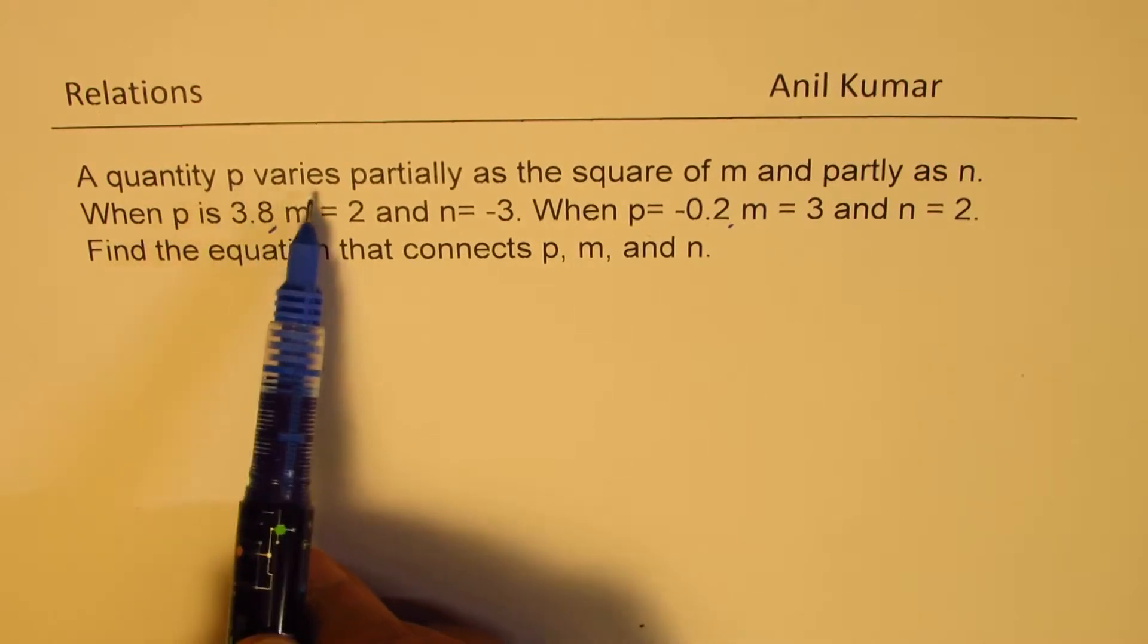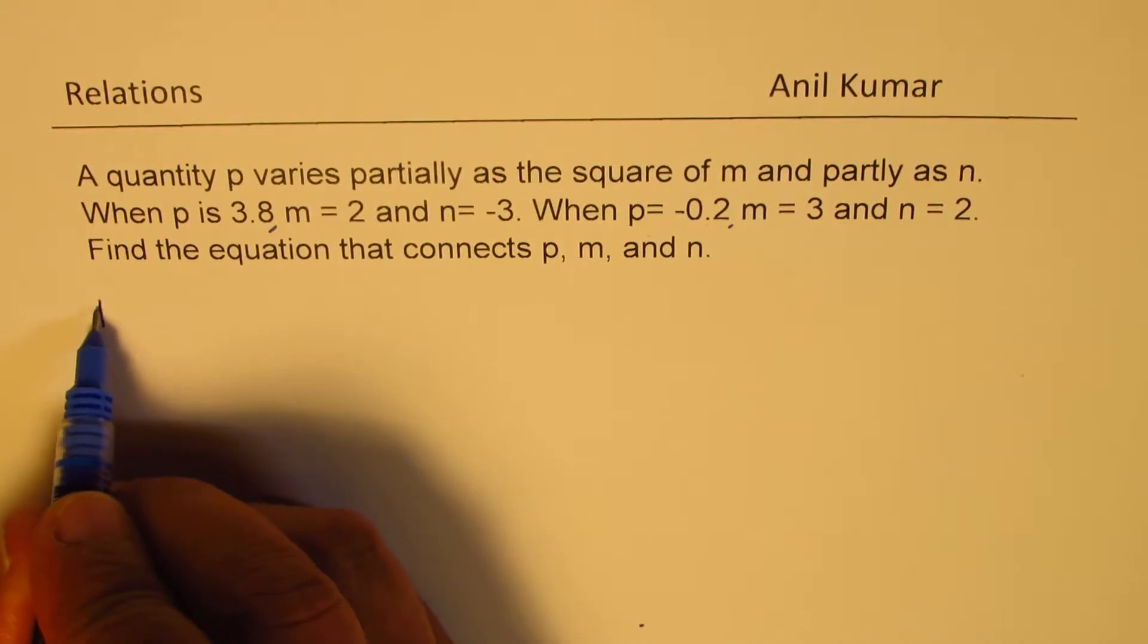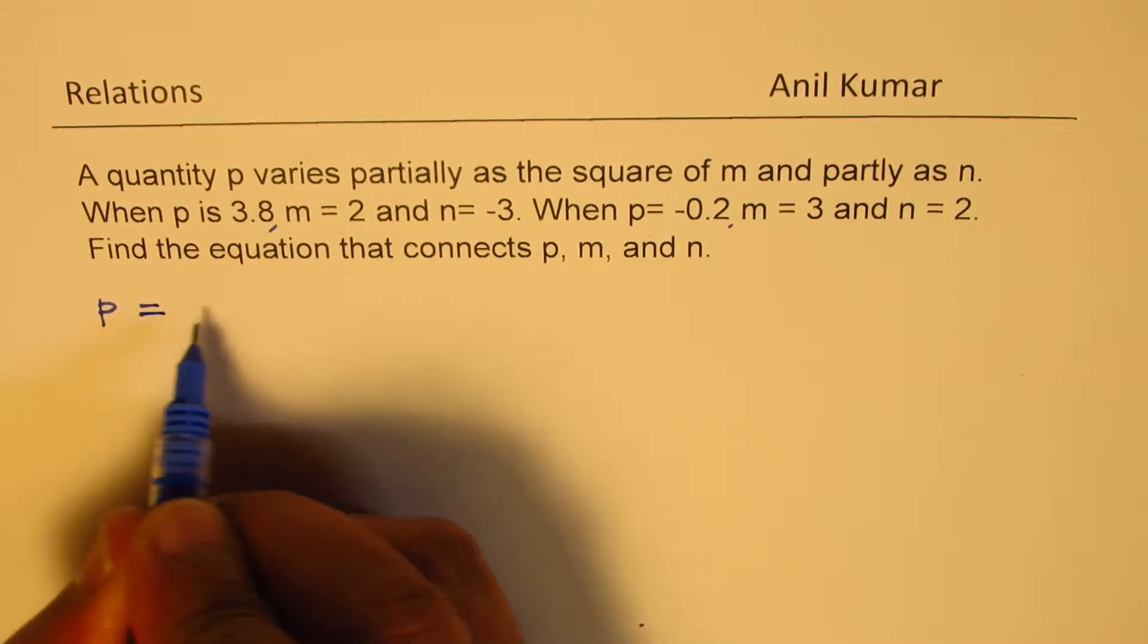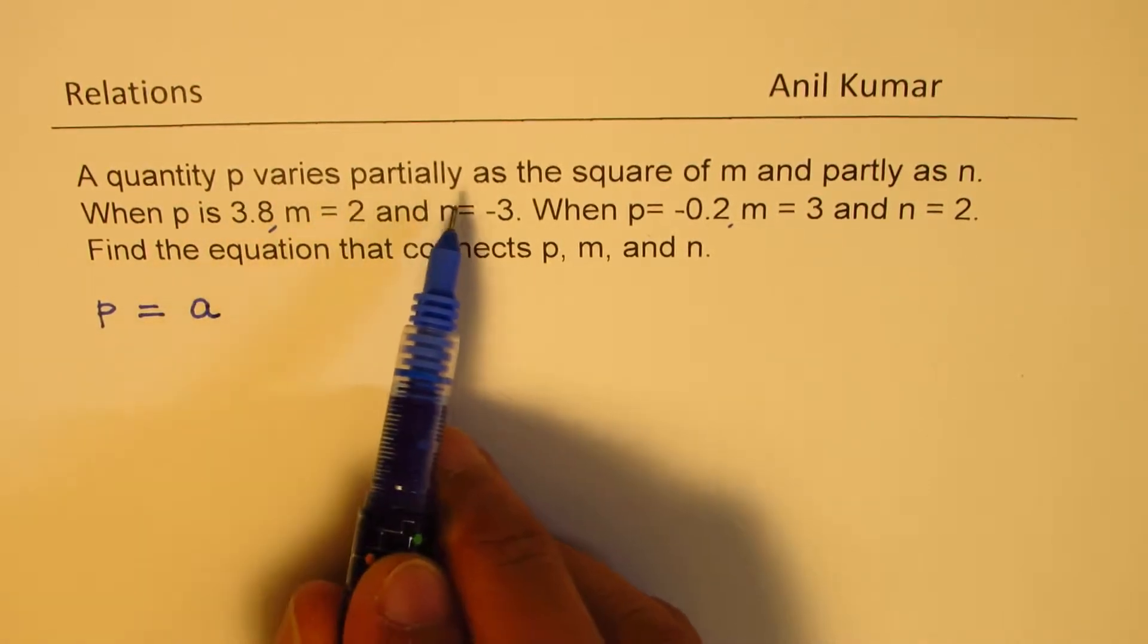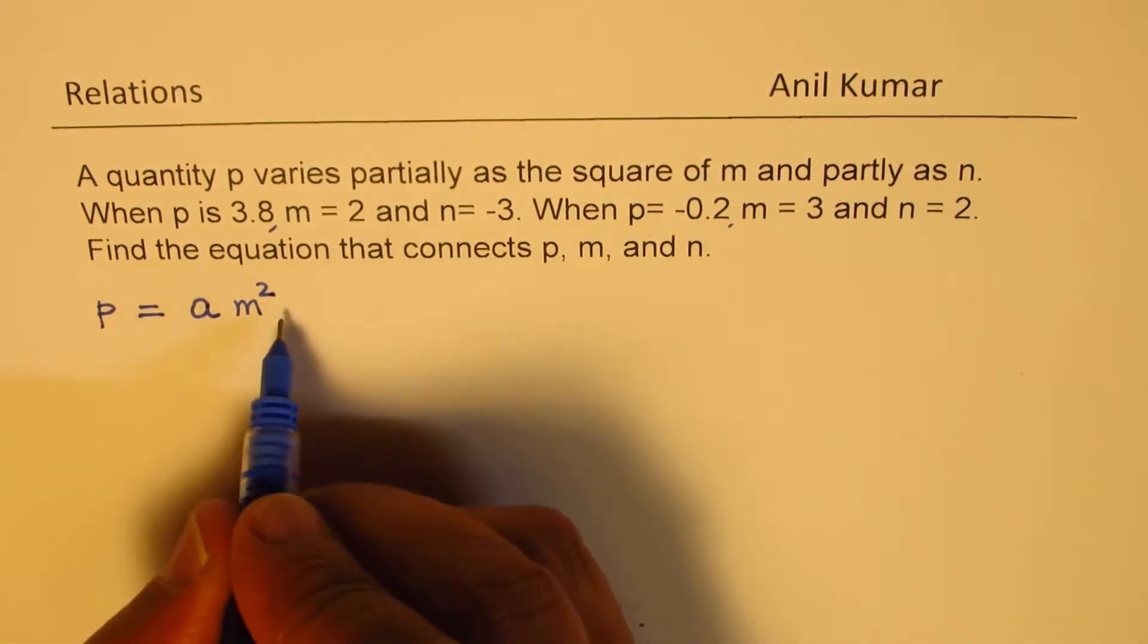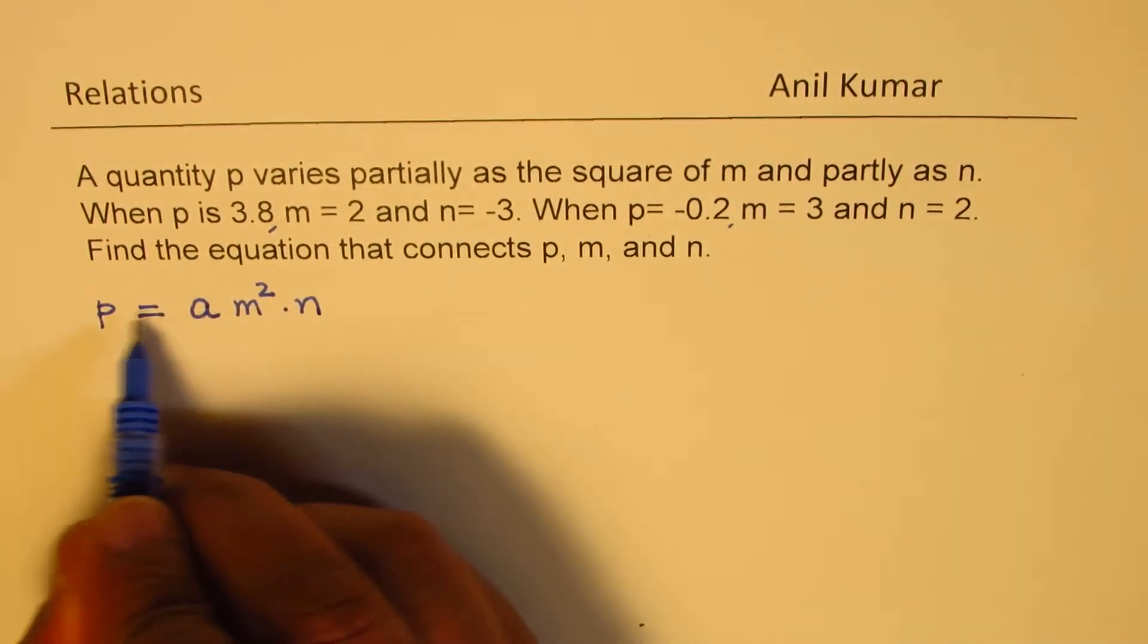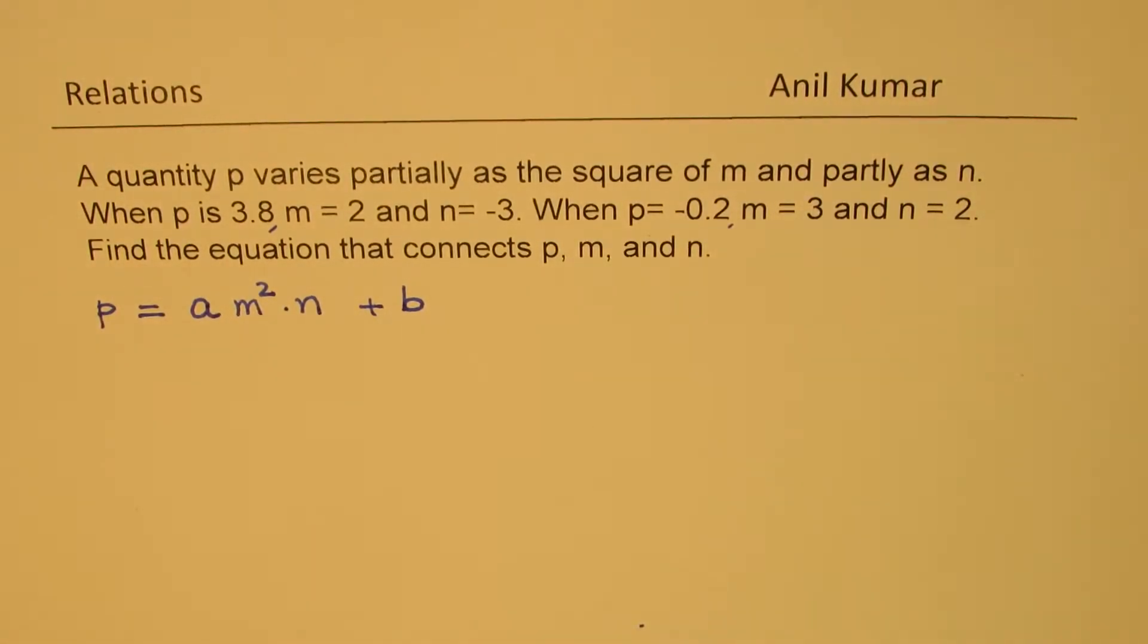Now when we say it is partially varying, that means it could be written as P is proportional to, but we write equal to with a constant, let's say A. So P partially varies as a square of M, that means A times M squared, and partly as N, so times N. Now since it is a partial variation, we'll write the equation as plus B. It's not a direct variation.